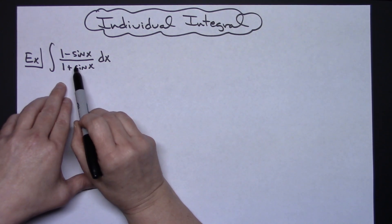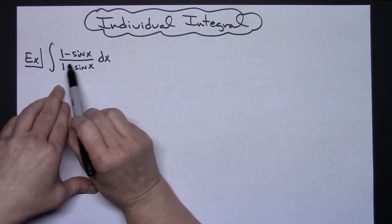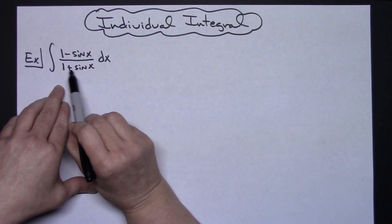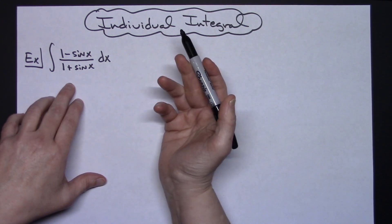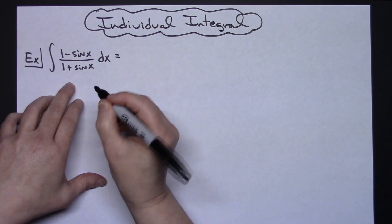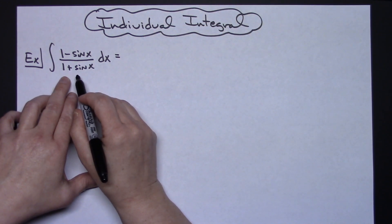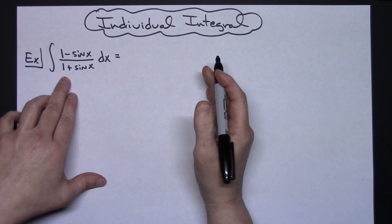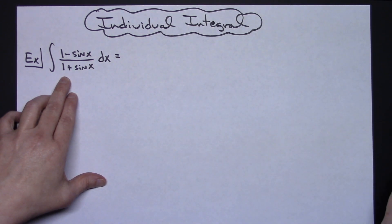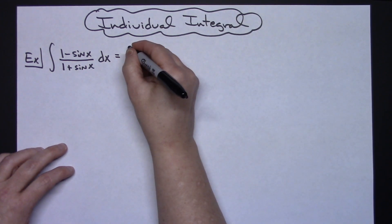What I want to do is manipulate this in such a way that I can get the denominator down to a single entity — not something that is being added or subtracted. For that reason I'm going to choose to multiply by the conjugate of the bottom, which will give me the difference of two squares: 1 minus sine squared x. Then I'll be able to use the Pythagorean identity to make a substitution.